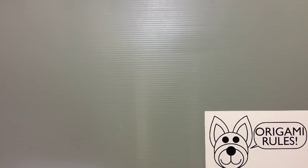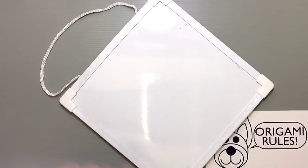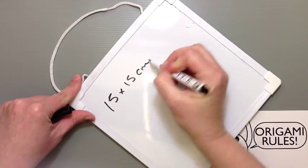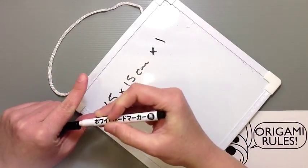For this particular origami, you just need regular old square origami paper. I'm going to be using paper that's 15 by 15 centimeters. I'll let you guys know the dimensions when we're finished.